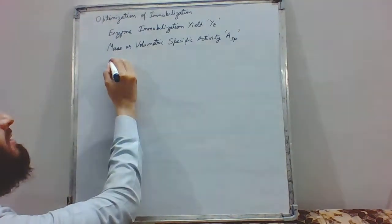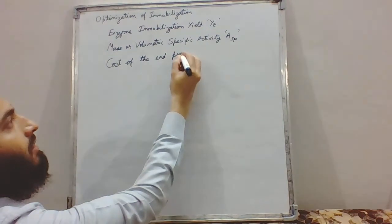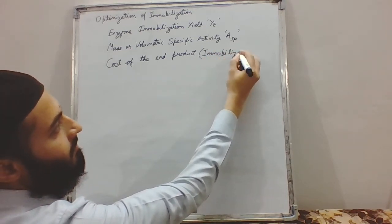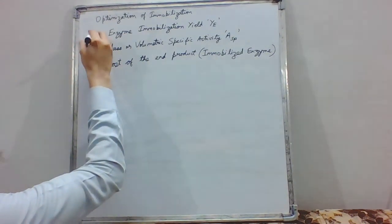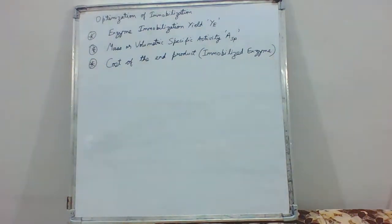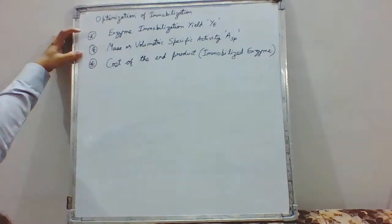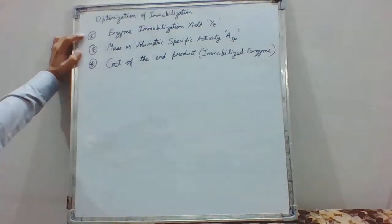Of course, there is another important parameter, which is the cost of the end product — here the end product is immobilized enzyme. These are the three prime parameters we need to focus on in optimization. We currently face a challenge in optimizing because if we have a better enzyme immobilization yield, it somehow results in a decrease in specific activity of the end product. So this has been optimized for many enzymes and we have a mediocre value.